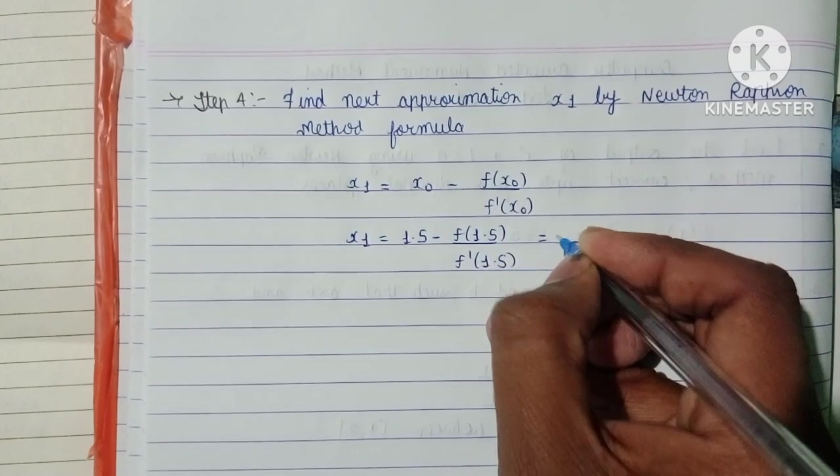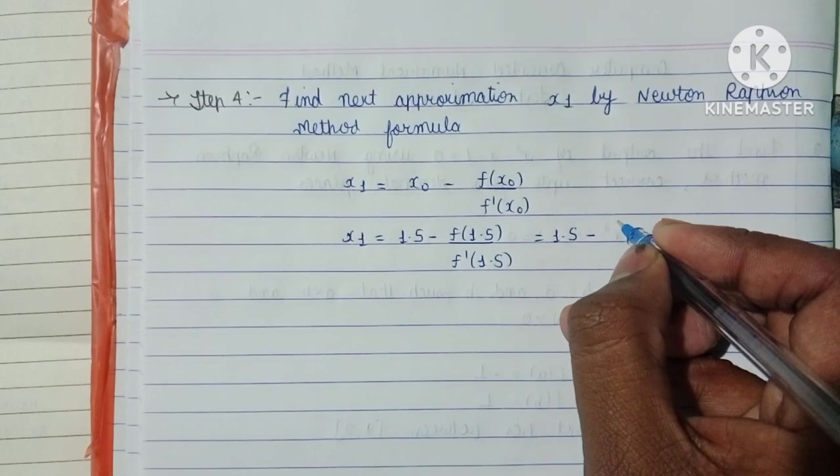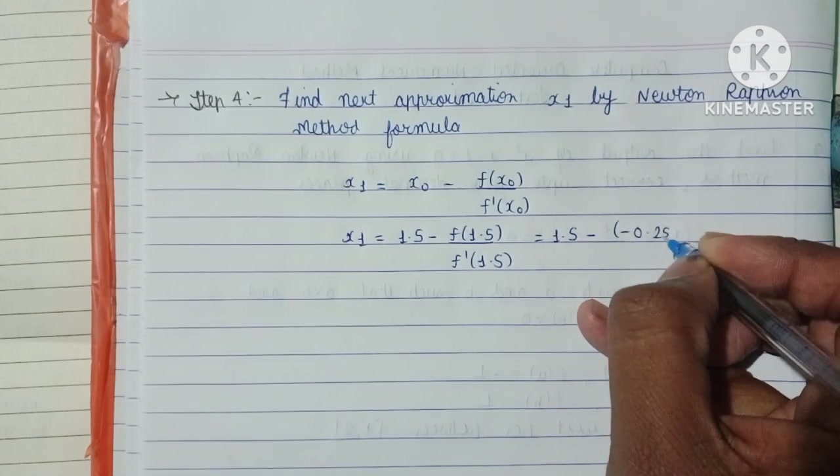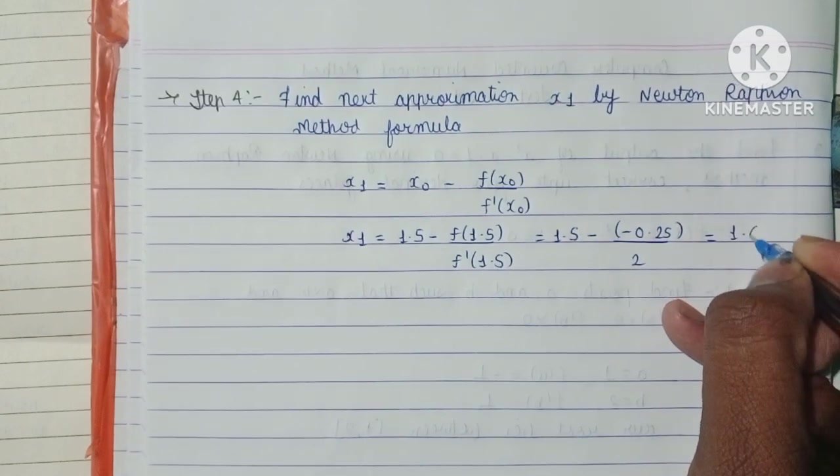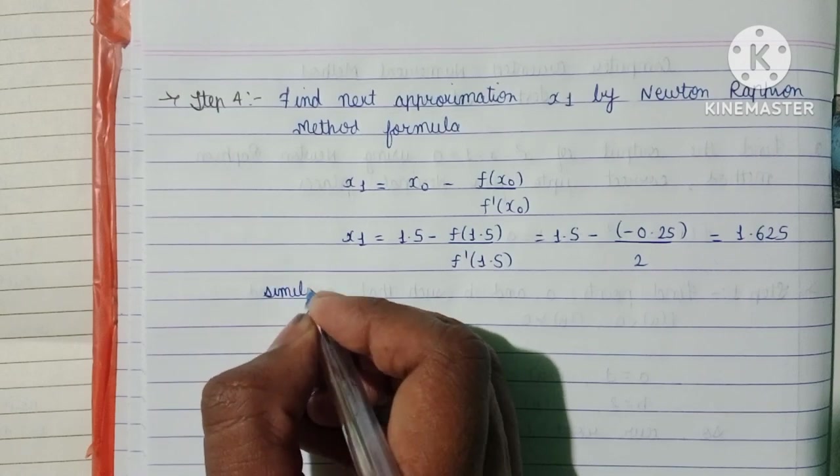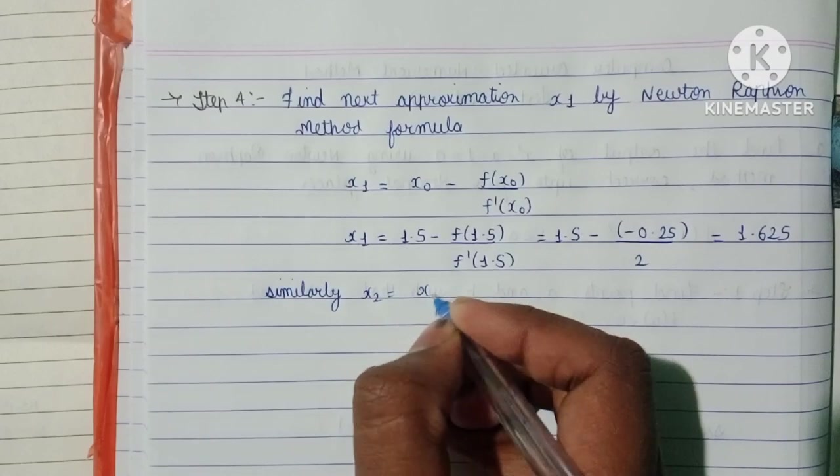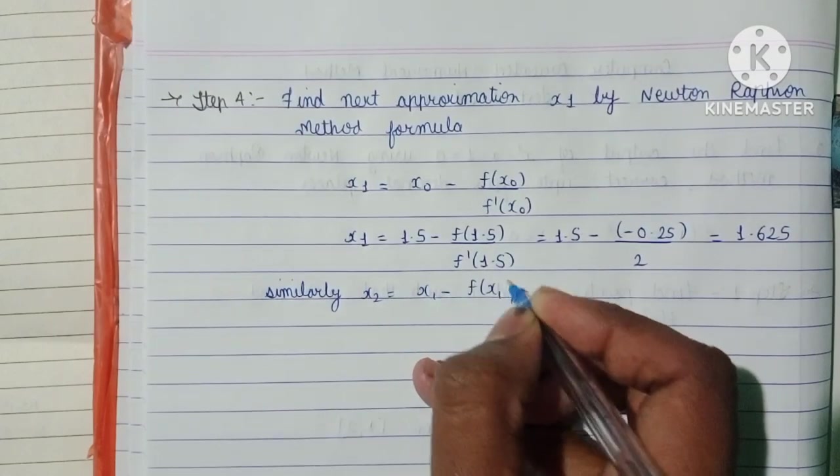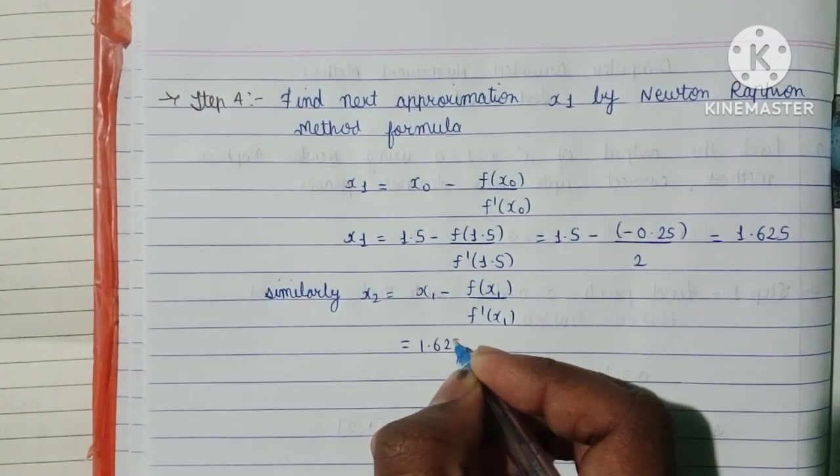The x₁ value is 1.625. Similarly, we find x₂ = x₁ - f(x₁)/f'(x₁). Putting the values: x₂ = 1.625 - 0.0156/2.25.